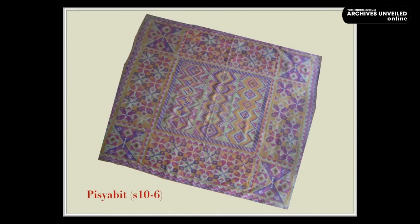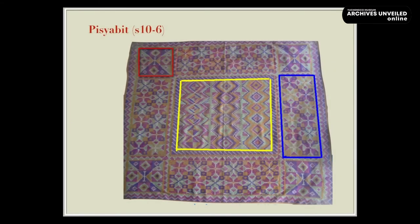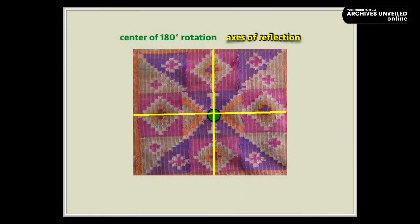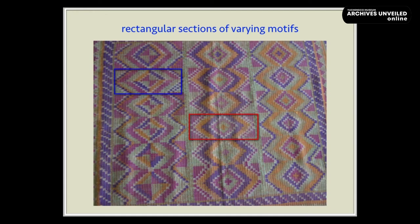The second pisha bit shown in this presentation consists mainly of a center square, four squares at the corners, and rectangular regions consisting of smaller squares at each side. Observe that the center square splits into 18 congruent rectangular regions, or sections exhibiting two distinct motifs.